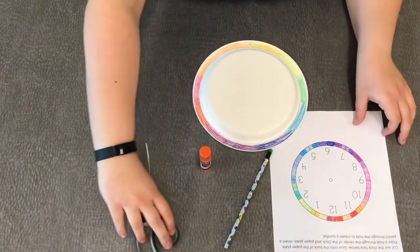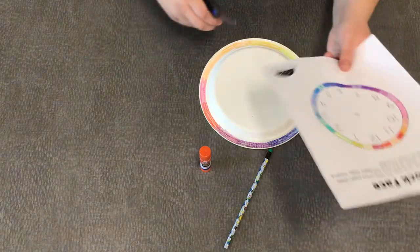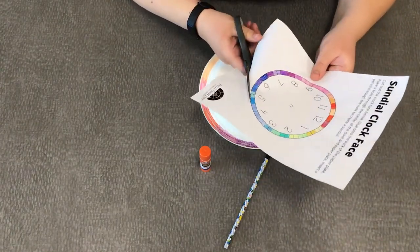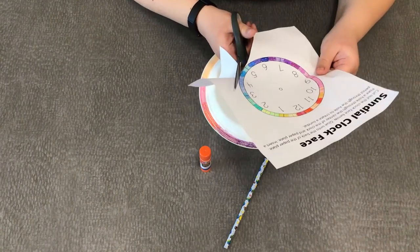Alright, my first step I am going to cut out my sundial clock face. So I'm just gonna follow along the edge and cut out a circle.